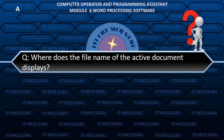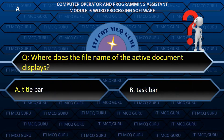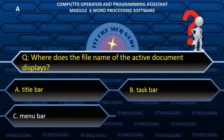Where does the file name of the active document display? A. Title bar.